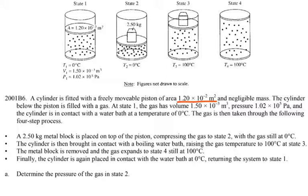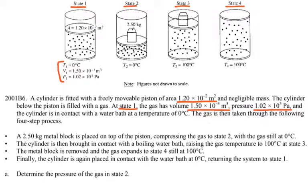They give you different states: state 1, 2, 3, and 4. At state 1, the gas has a given volume and pressure. The cylinder is in contact with a water bath at zero degrees Celsius, so the gas is at zero degrees Celsius.